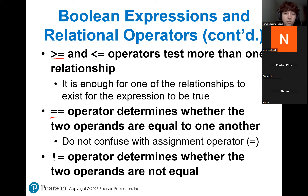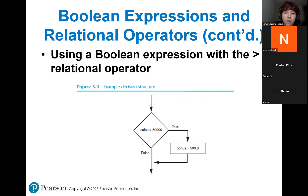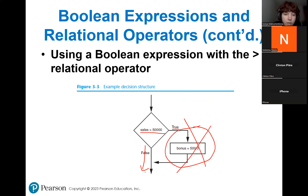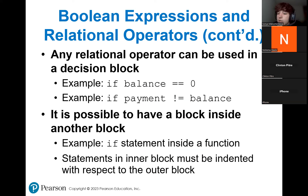The double equal sign determines if two operands are equal to each other, and the exclamation-equal checks if they are not equal. Here's a flowchart example: if sales are greater than 50,000, it evaluates to true and whoever made those sales receives a bonus of 500. If sales are less than that, we skip the whole bonus block and just move on with our code. Any relational operator from the table can be used in your decision block.